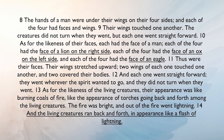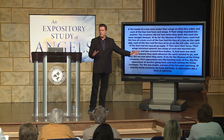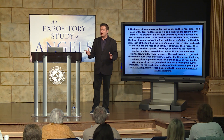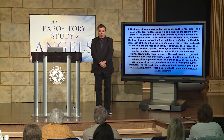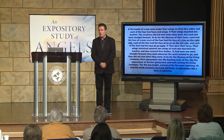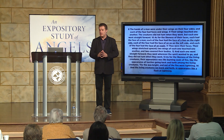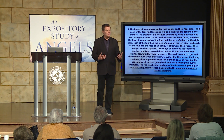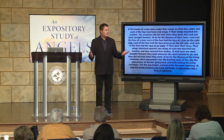'Their wings stretched upward; two wings of each touched one another, and two covered their bodies.' It's interesting that they're not shown flying here because they're on the earth. When you see them later in heaven, there's another pair of wings — so either the wings are folded to look like four on earth, or on earth they appear with four wings and in heaven with six wings.